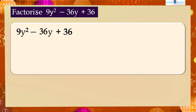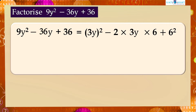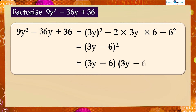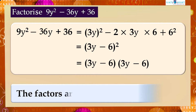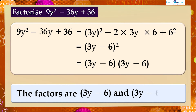So 9y squared minus 36y plus 36 can be written as (3y) whole square minus 2 × 3y × 6 plus 6 squared, which equals (3y minus 6) whole square, which equals (3y minus 6)(3y minus 6). Therefore, the factors are (3y minus 6) and (3y minus 6).